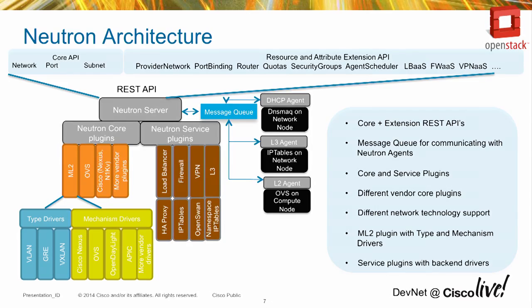The mechanism drivers within the modular layer 2 plugin are the vendor pieces that communicate with Cisco devices, controllers, or open source devices. For example, the Cisco Nexus mechanism driver can communicate with Cisco 3K, 5K, 6K, 7K, and 9K in standalone mode. We also have the APIC ML2 driver — when you create a network within OpenStack, that provisions an endpoint group within APIC. Using the REST API within OpenStack, you can configure the appropriate device in your infrastructure for the resources you provision.